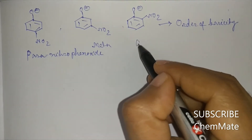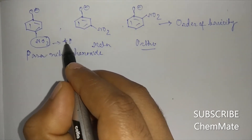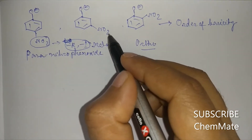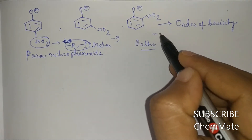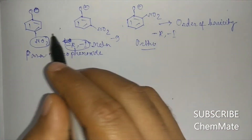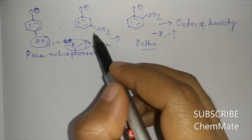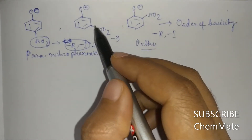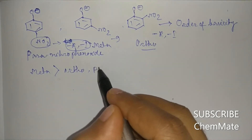This is meta and this is ortho. As you can see, the nitro group will operate minus R and minus I effect in para position. In meta position it will have only minus I, and in ortho position again the nitro group will have minus R and minus I. So the electron availability in O minus will be lesser in ortho and para, because the negative charge will come into resonance with the nitro group. Whereas in meta position the minus R effect will not operate, but only the minus I effect, which will decrease electron availability slightly. So the basicity of meta is greater than ortho and para.